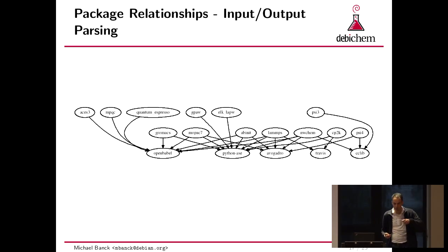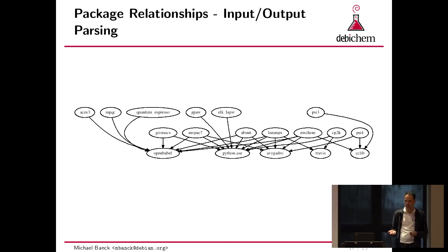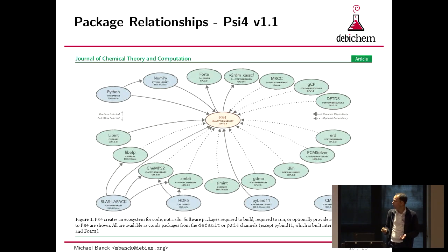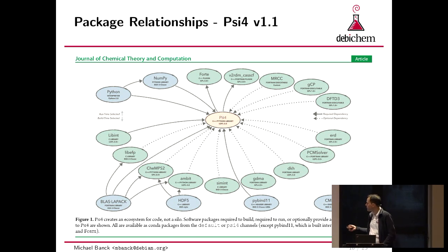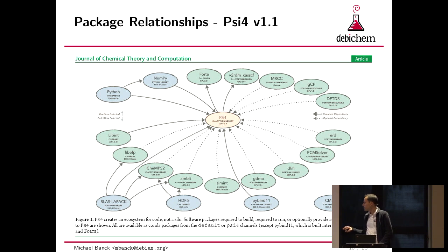There's also a graph of how the input-output things work. We have packages like OpenBabel, Python ASE, Avogadro, Travis, and CCLib that parse the output of packages to either compute properties, display properties, or transform outputs into other file formats. They can also produce inputs, because most packages still rely on text input and output. There was a recent paper for PSY-4 showing all these external projects they integrate — all open source except for MRCC. We've packaged libint and CAMM, but all the other ones are still not packaged, so we have quite some work to do.